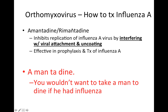To treat influenza A, we use amantadine or rimantadine. This inhibits replication of influenza A virus by interfering with viral attachment and uncoating, and it's effective in both prophylaxis and treatment of influenza A. To remember what this drug treats, break the word into pieces: 'a man to dine' — like taking a man to dinner. You wouldn't want to take a man to dine if he had influenza. So: a man to dine treats influenza.